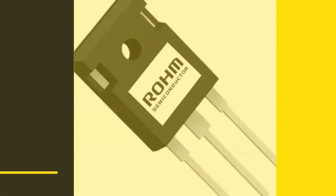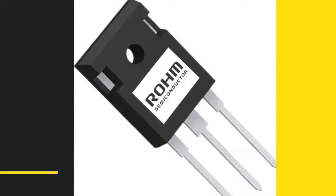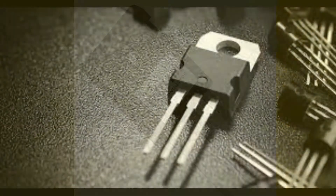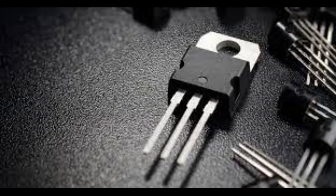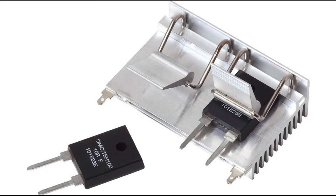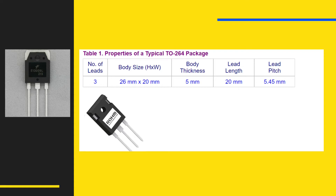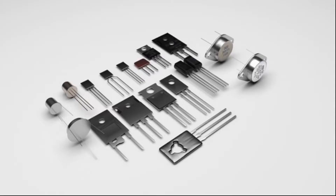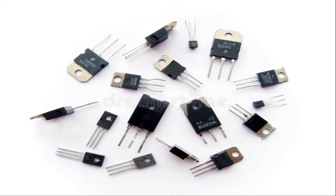The TO264 is a type of plastic molded package used primarily for high power applications where heat dissipation cannot be handled by common packages like TO220 and TO218. The TO264 body is designed for easy attachment to an external heat sink so that it can be operated with higher current capacity. The lead count of a typical TO264 package ranges from 2 to 5, and the typical lead pitch of a 3-lead package is about 5.45 mm. All these types of TO packages apply not only to transistors, but also to MOSFETs, SCRs, thyristors, regulators, and IGBTs.